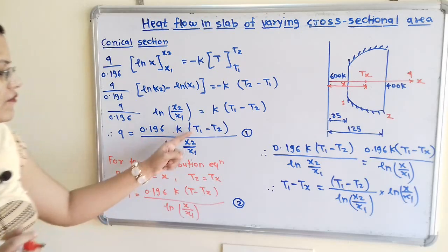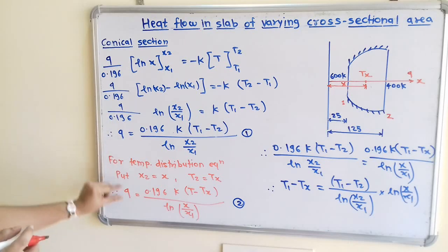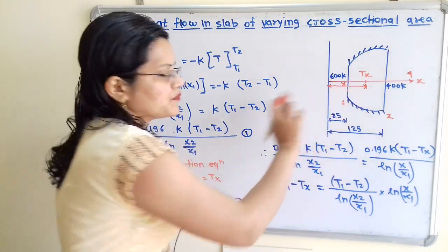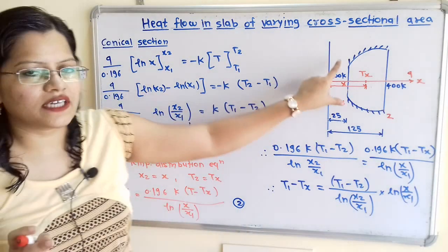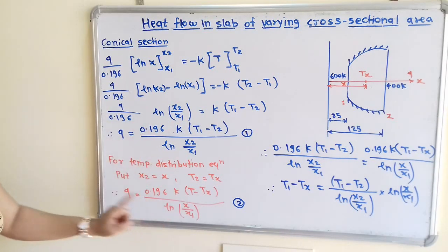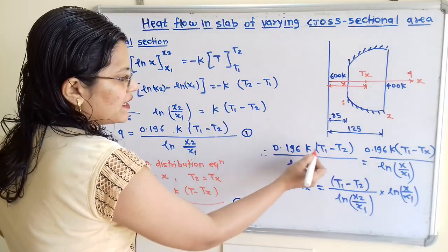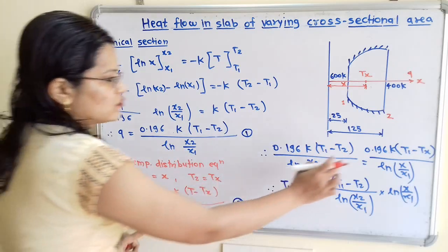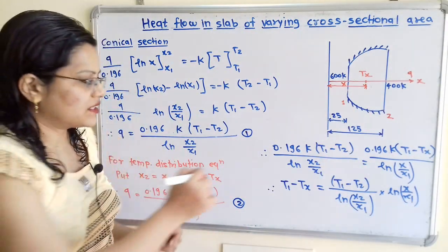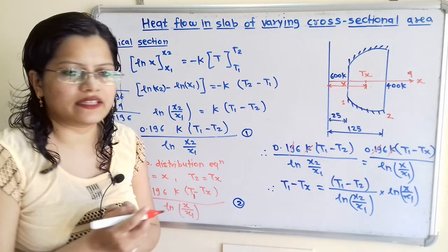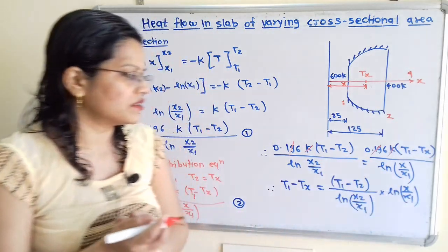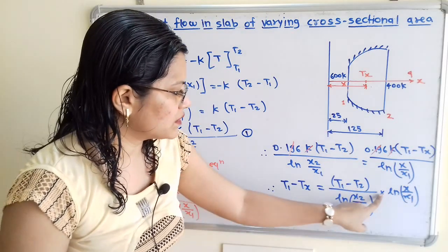Since Q is not a function of X and this is unidirectional steady state conduction, the left-hand sides of both equations are equal. Equating the right-hand sides: 0.196K(T1 − T2) / ln(X2/X1) = 0.196K(T1 − TX) / ln(X/X1). The constants 0.196K cancel, giving: T1 − TX = [(T1 − T2) / ln(X2/X1)] · ln(X/X1). This is the temperature distribution equation.